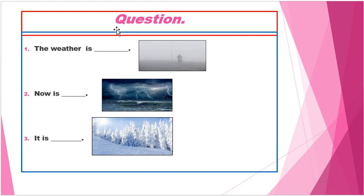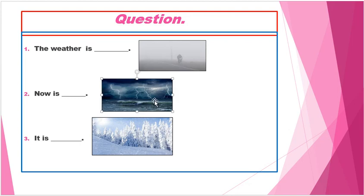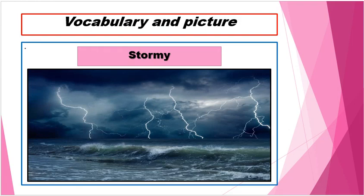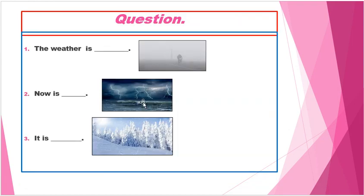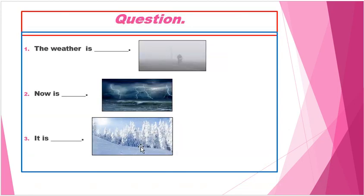Now we will have questions — you must know what this weather is. So: the weather is blank — what is this one? The weather is foggy. Next, number two: this weather is stormy — that is when there is wind, thunder, and lightning all mixed together. Number three: this weather is snowy — you can see small soft ice droplets falling from the sky.